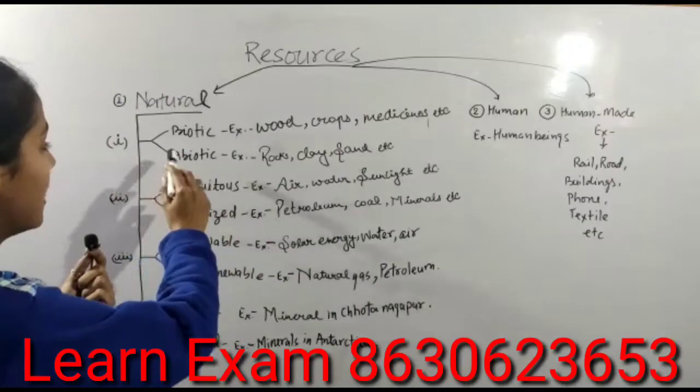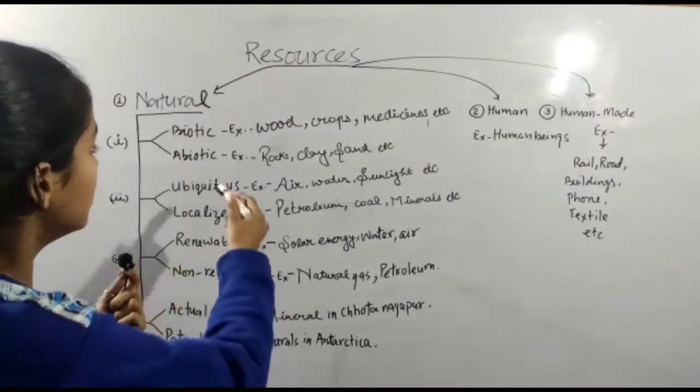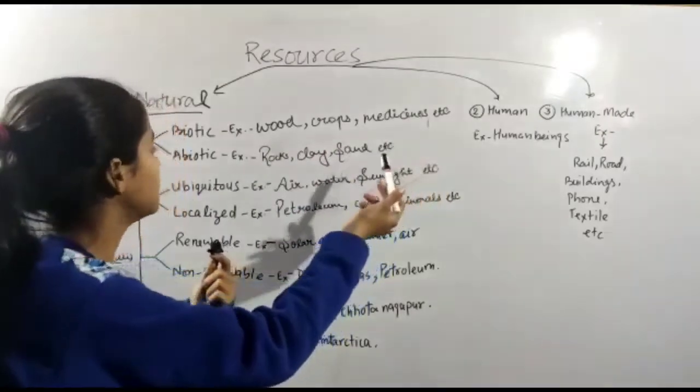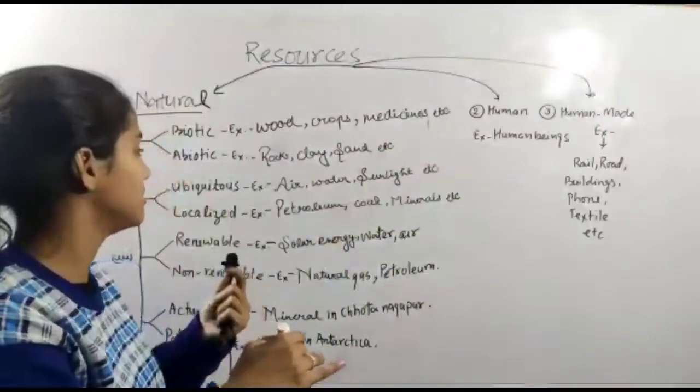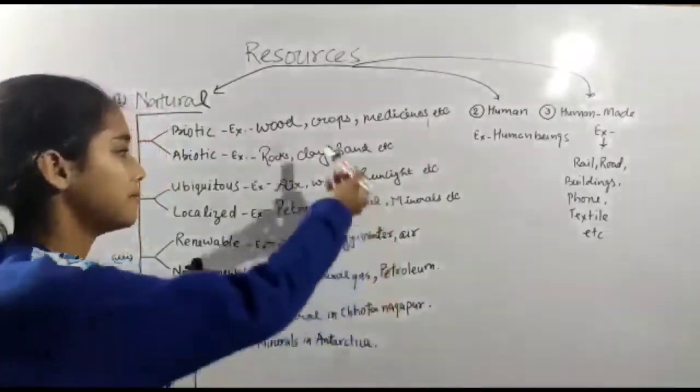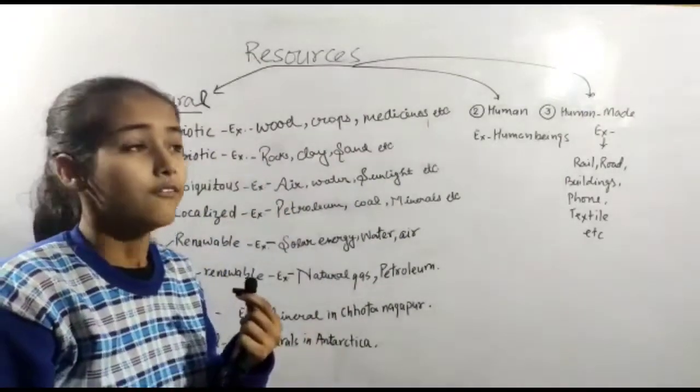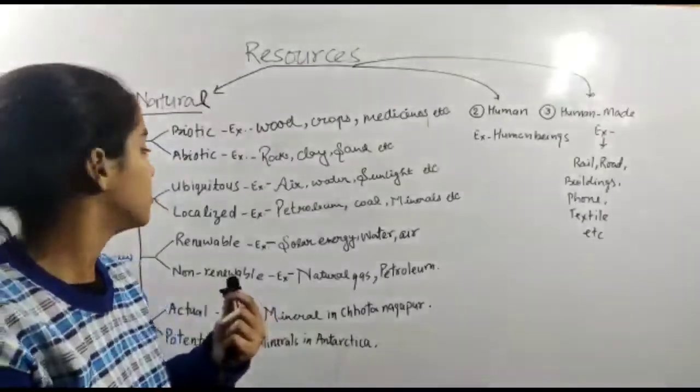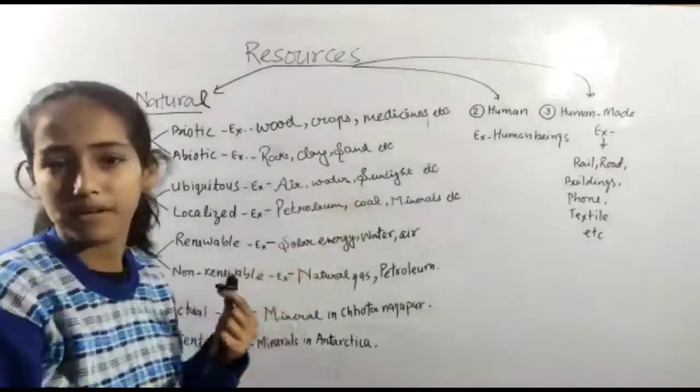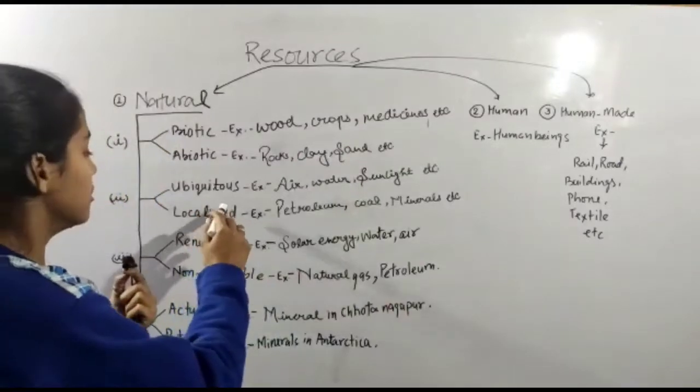So this first part is biotic. Those materials which are developed from living organisms are called biotic resources. For example wood, crops, medicine etc. Those resources which are get from the non-living things are called abiotic. For example rocks, metals.